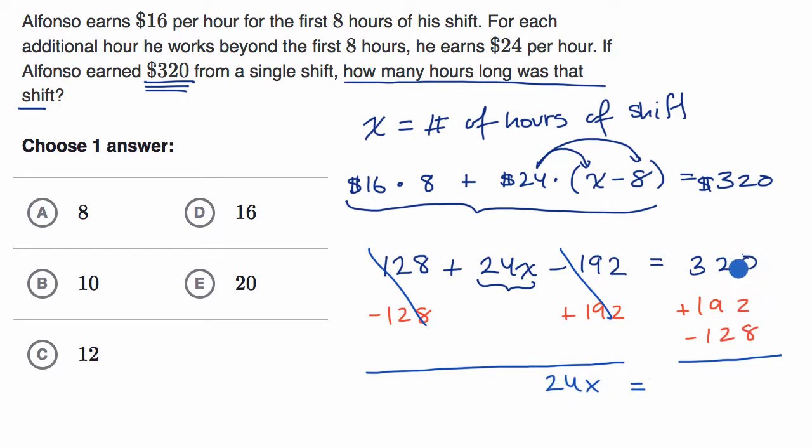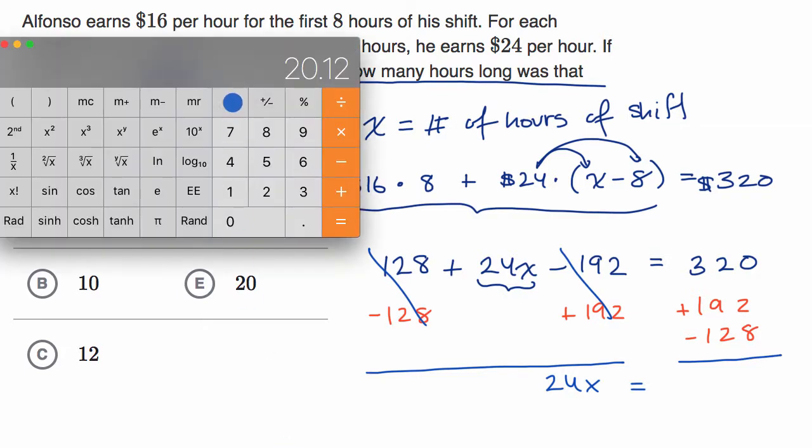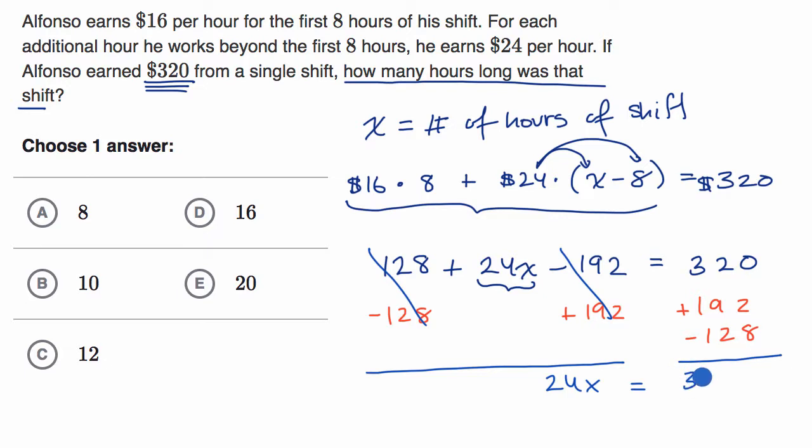And then our right-hand side, you could do this by hand, but I keep talking about a calculator, so let me just get a calculator out and do it. So you have 320 plus 192 minus 128 is equal to 384. And we're going to have to divide by 24. So this is going to be 384.